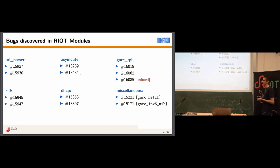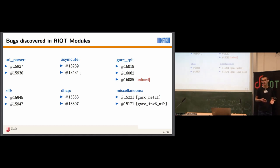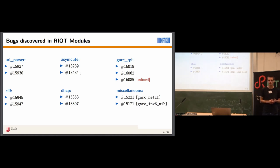Since our error model focuses on spatial safety violations, the majority of bugs found are indeed spatial memory safety violations in these modules — which is somewhat critical because some may be exploitable, especially if the buffer is located on the stack. Some of these modules had manual unit test suites, like CoAP and the URI parser, but these bugs were missed by manual unit testing. Most of these bugs have been fixed. There is one bug in RPL which remains unfixed, and if anyone is interested in helping with that, I would very much appreciate it.